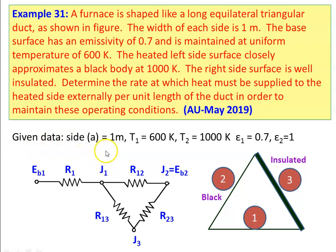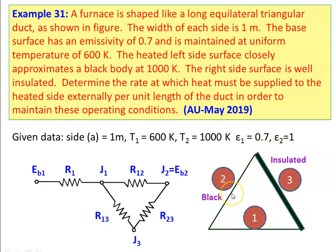Given data: all three sides are equal to 1 meter. Temperature of surface 1 is 600 Kelvin, temperature of surface 2 is 1000 Kelvin, which is considered as a black surface, and the third surface is insulated. Emissivity of the first surface is 0.7; surface 2 is black so emissivity equals 1, meaning surface resistance equals 0. For the second surface, there is no surface resistance, and the third surface is insulated acting as a re-radiating surface, so there is also no surface resistance. This is the network diagram for the arrangement.